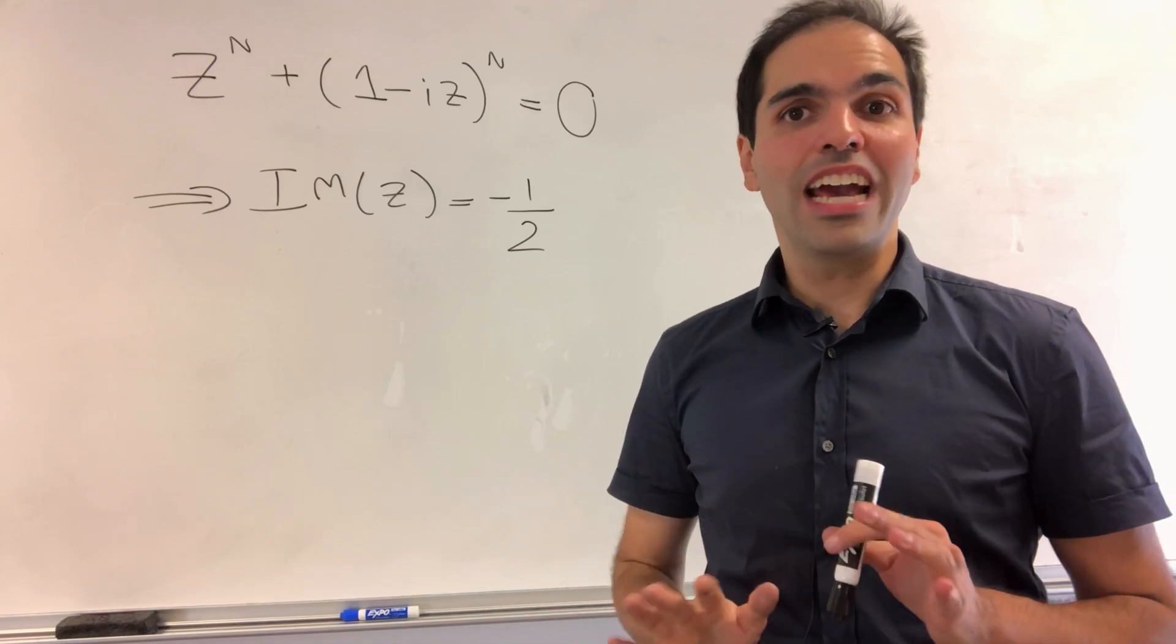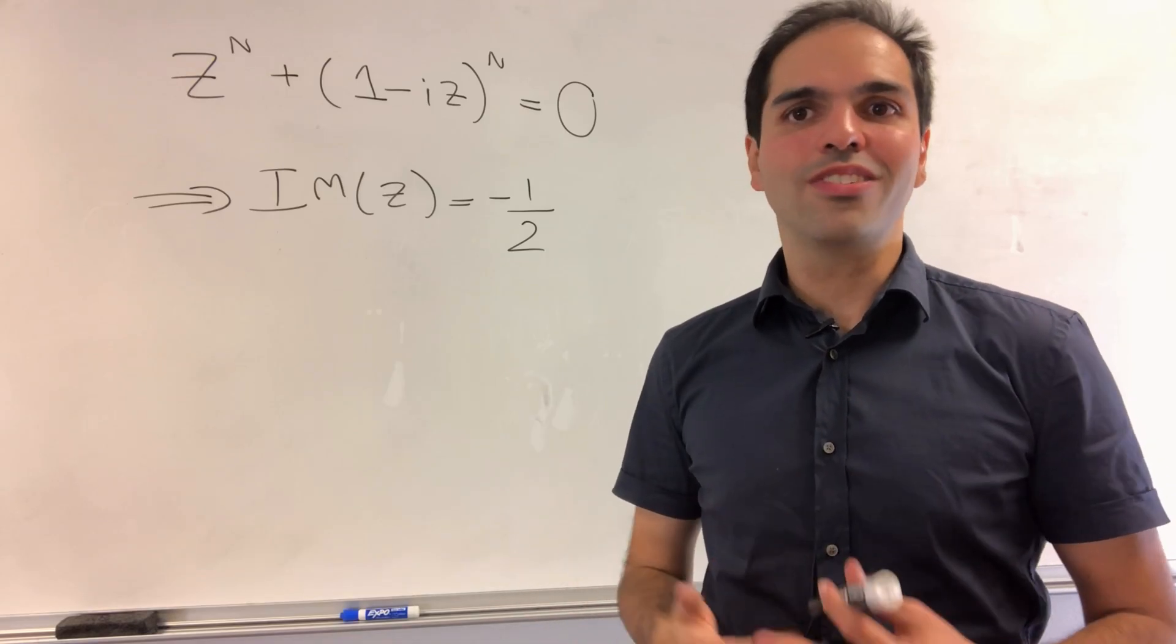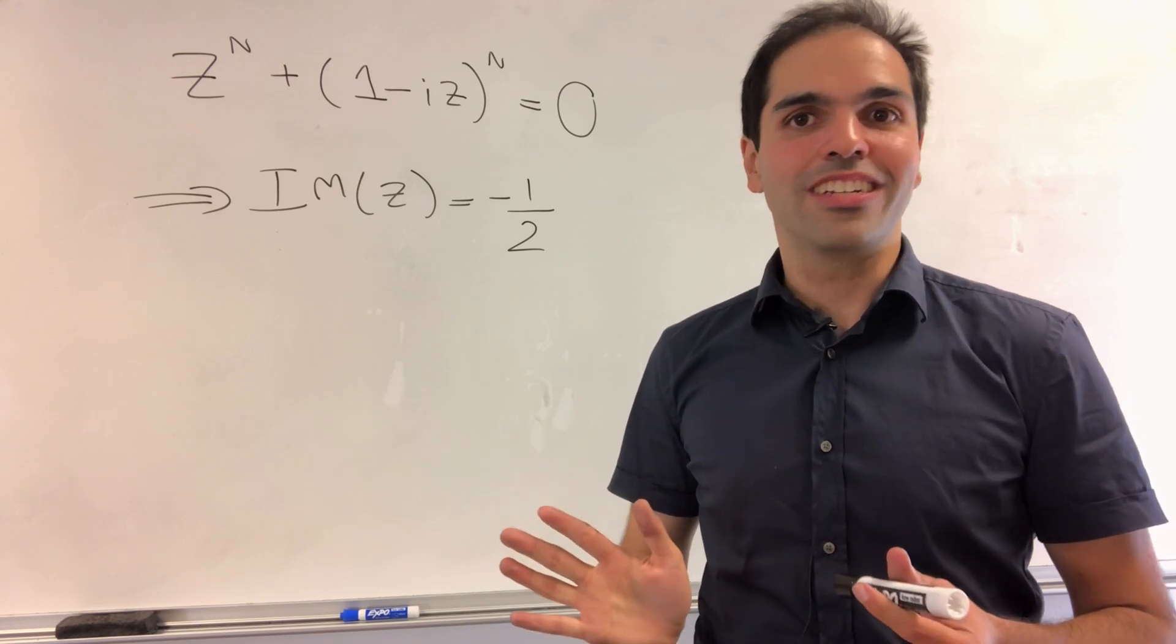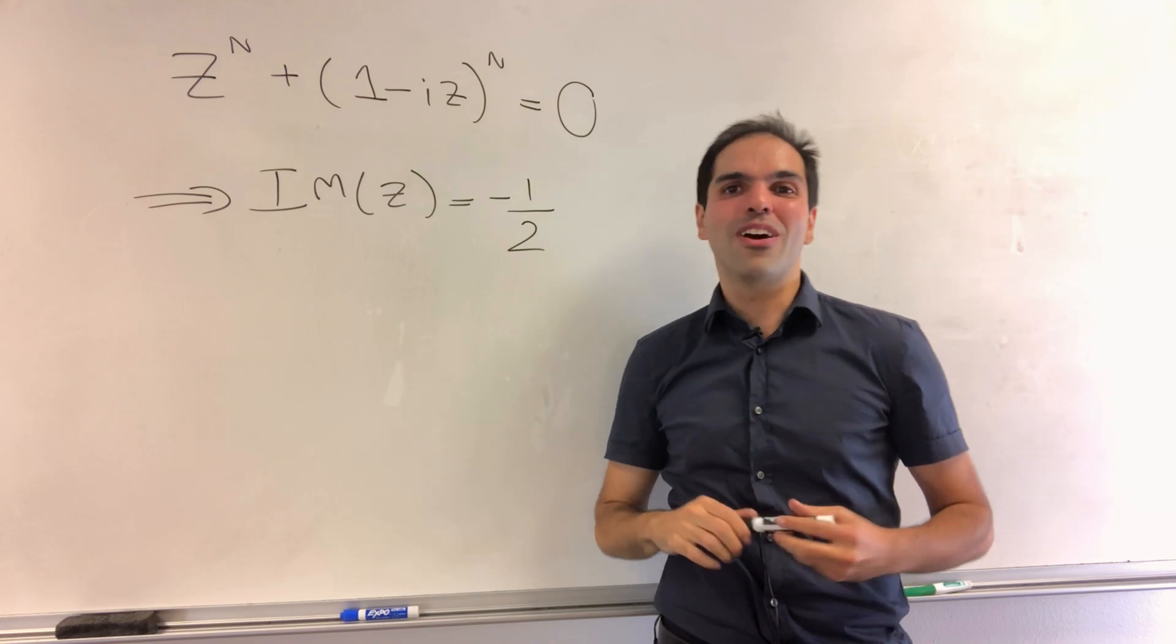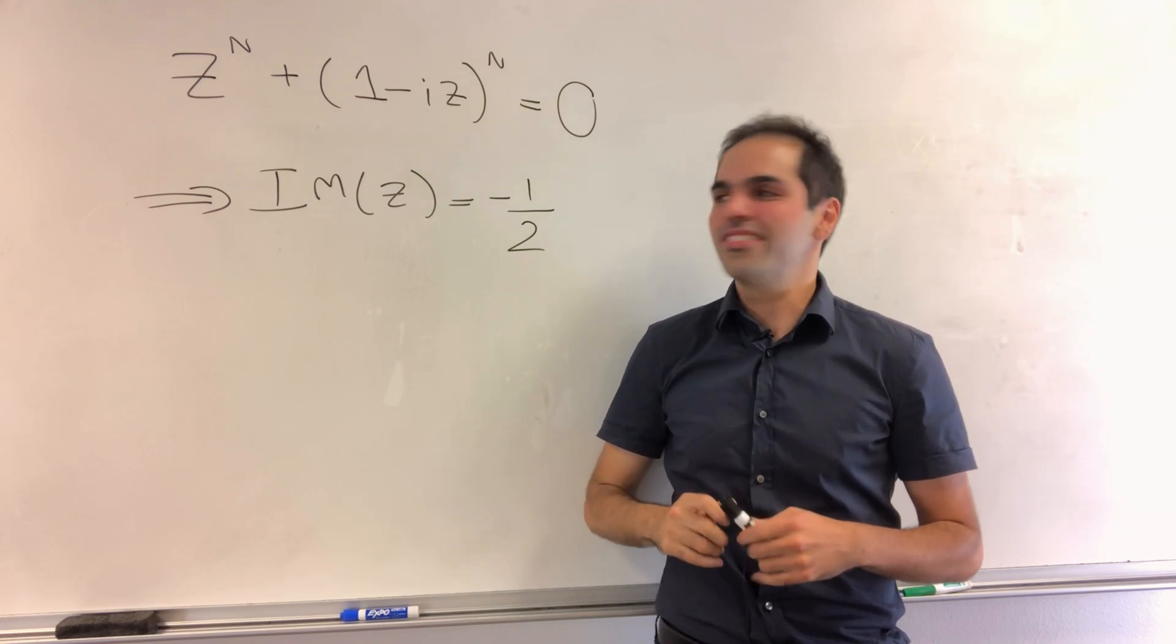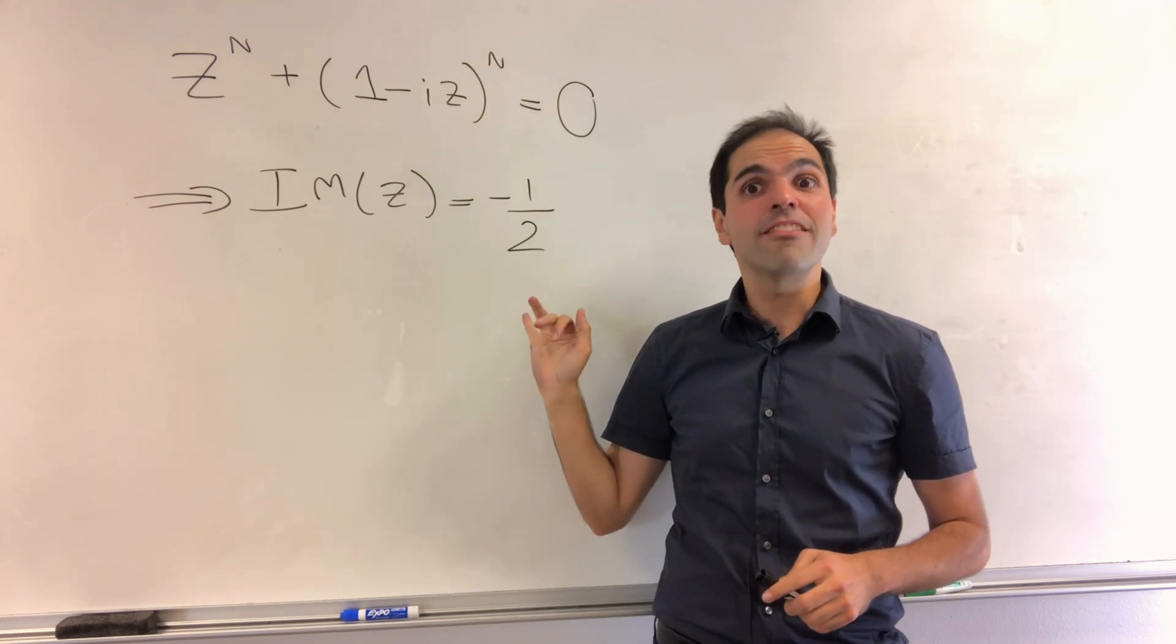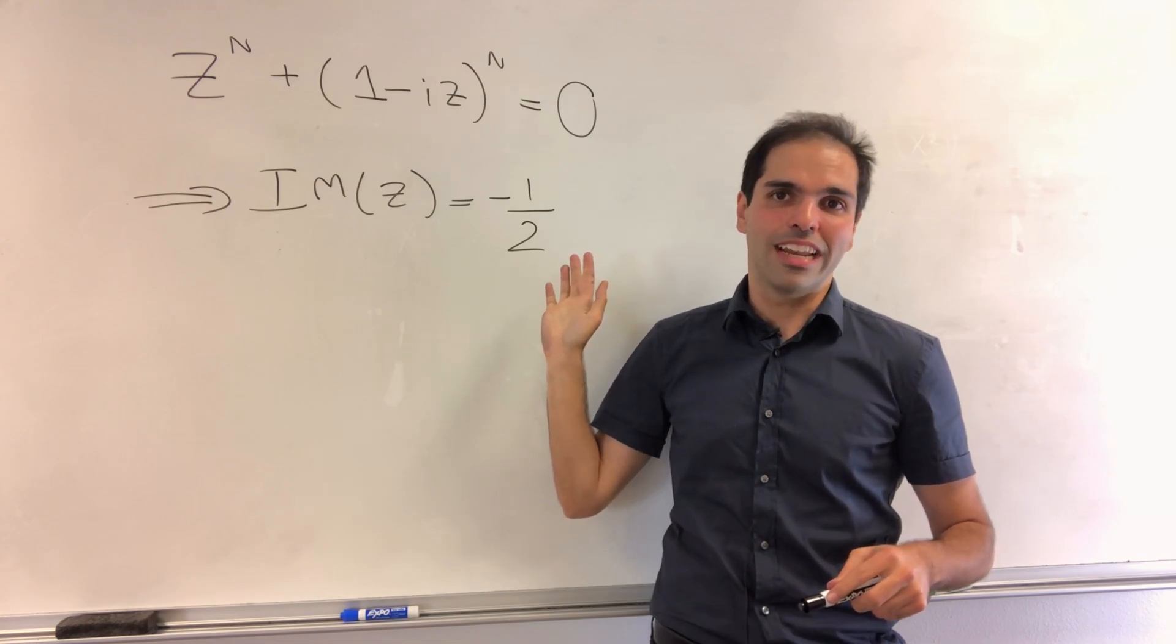All right. Thanks for watching. And today I'm going to solve a grad school entrance exam question, which actually stumped me. And the question is, consider z to the n plus 1 minus iz to the n equals 0. Show that the imaginary part of z equals minus 1 half.